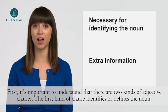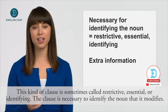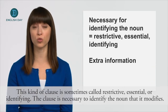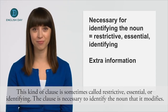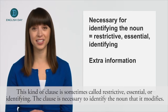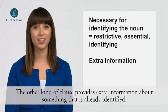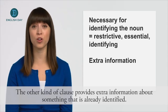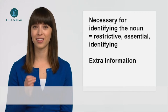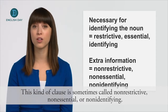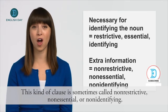The first kind of clause identifies or defines the noun. This kind of clause is sometimes called restrictive, essential, or identifying. The clause is necessary to identify the noun that it modifies. The other kind of clause provides extra information about something that is already identified. This kind of clause is sometimes called non-restrictive, non-essential, or non-identifying.